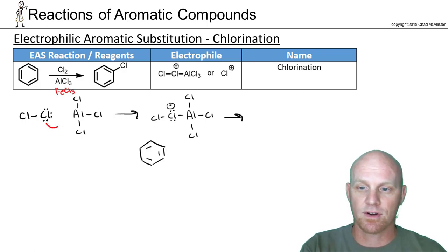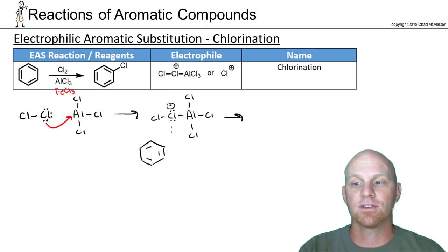First thing we're going to do is have our Lewis acid catalyst act as a Lewis acid. We'll make a new bond to him with chlorine, and get our electrophilic species. Benzene now can react with the electrophile.